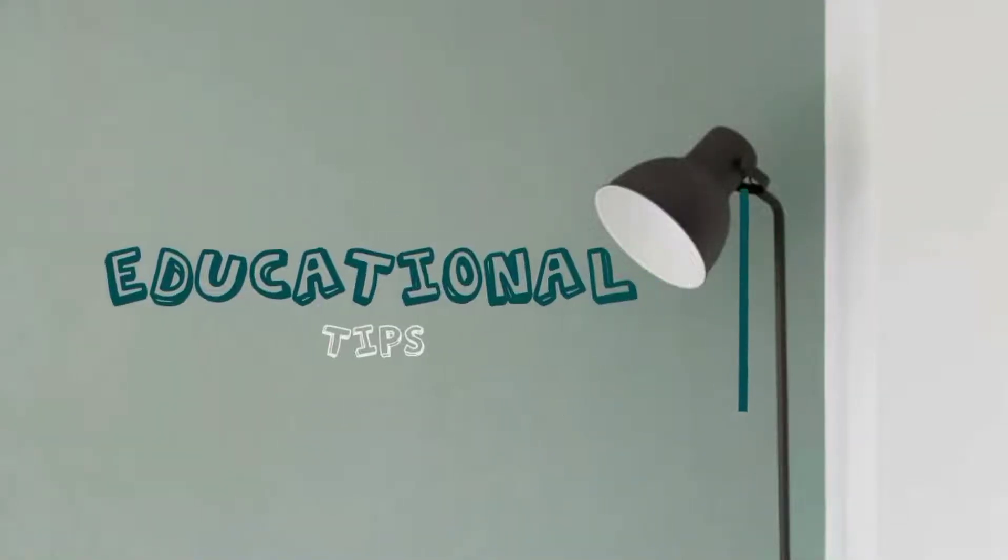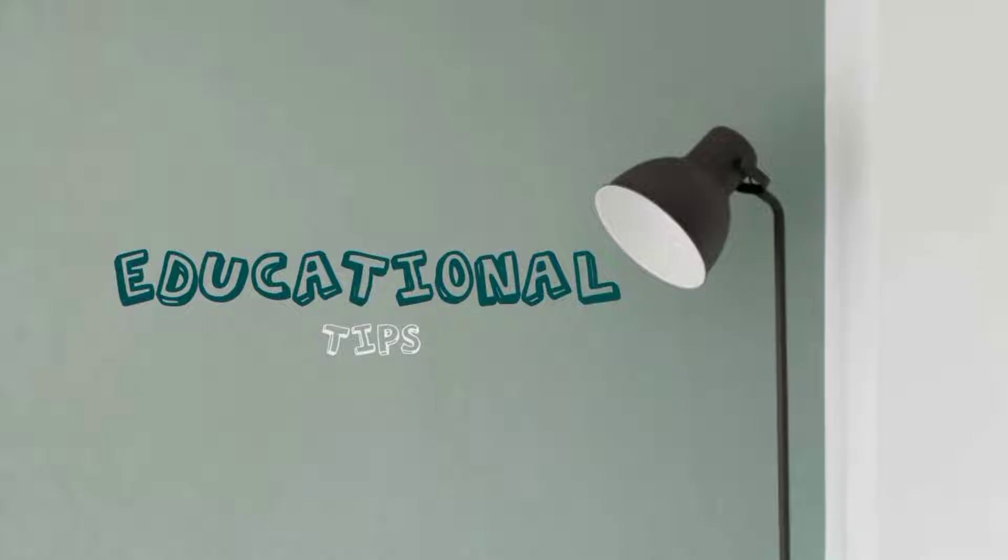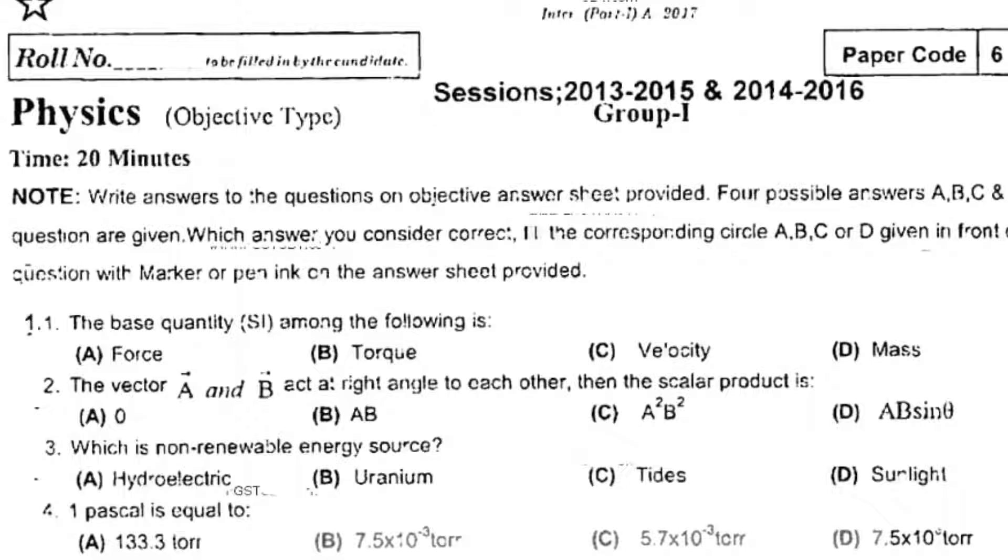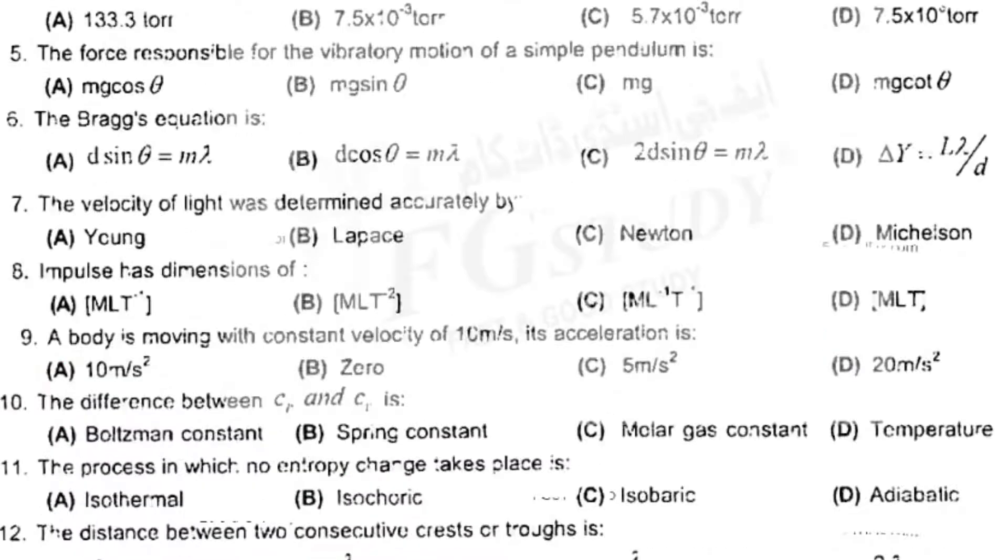Assalamu alaikum, hope you will be fine. Today we will solve first year physics Rawalpindi Board past papers from 2017 to 2022. Let's start. The base quantity SI among the following is mass. The vectors A and B act at right angle to each other, then the scalar product is zero. Which is non-renewable energy source? Uranium. One pascal is equal to 7.5 × 10^-3 torr. The force responsible for the vibratory motion of a simple pendulum is mg sin theta.